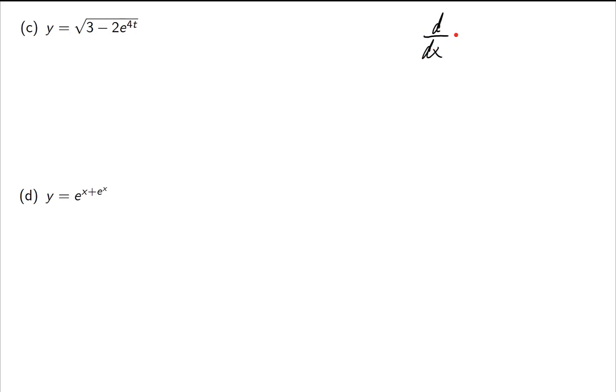Remember I told you that the derivative of square root of x has a rule that's so common you might as well memorize it to be 1 over 2 square root of x, and I'm going to use that right here. The derivative would be using this rule, which would be 1 over 2 times the square root of, leave the inside alone, 3 minus 2e to the 4t, times the derivative of the inside.